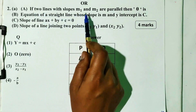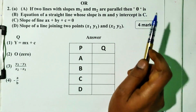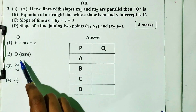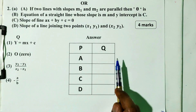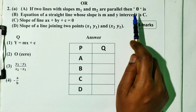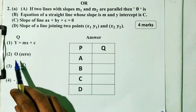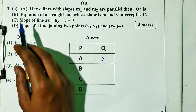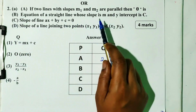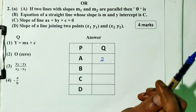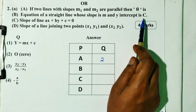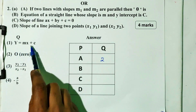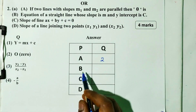First question: if two lines with slope m1 and m2 are parallel, then the answer is option 2 — that is the second one. Next question b: equation of straight line whose slope is m and y-intercept is c. That is option 1 — that is y equal to mx plus c. Question b answer is 1.